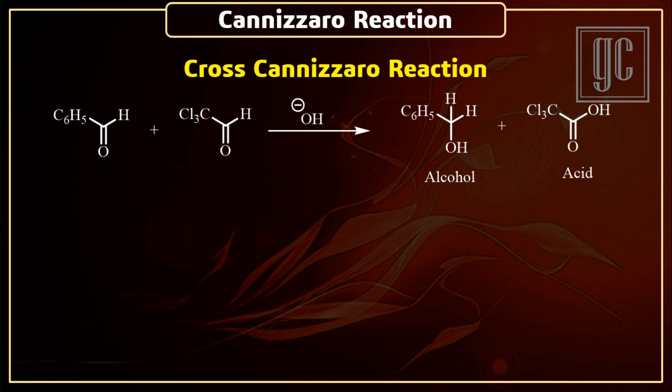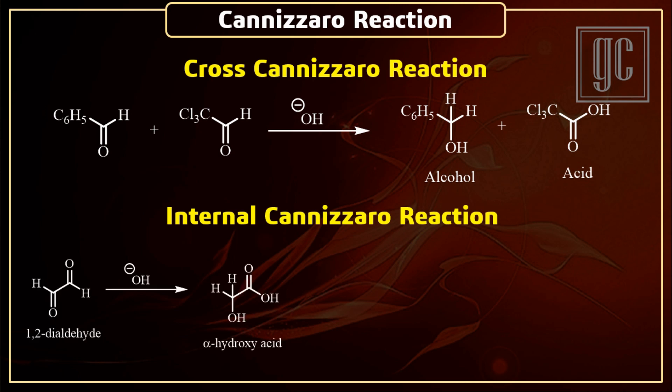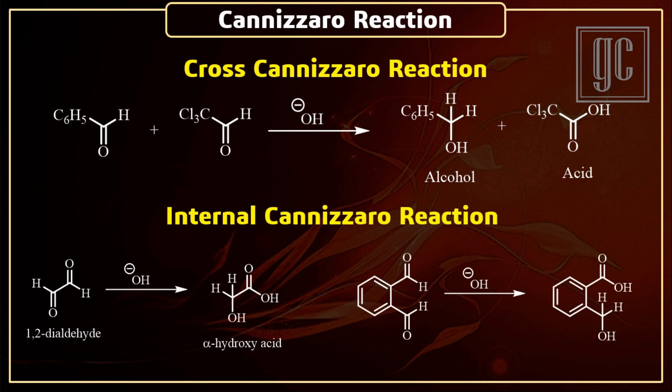In the cross Cannizzaro reaction, the more electron-deficient molecule is converted into the acid and the electronically rich molecule forms the alcohol. When a molecule has multiple aldehyde groups and gives an intramolecular reaction, then the Cannizzaro reaction is known as the internal Cannizzaro reaction.